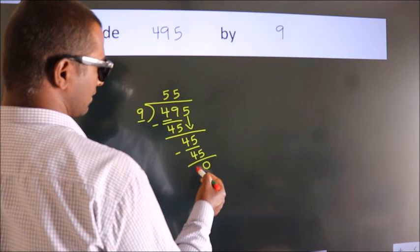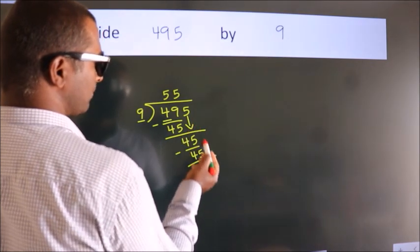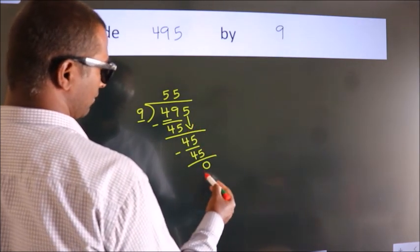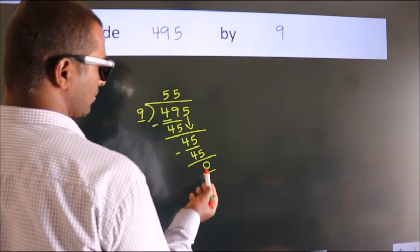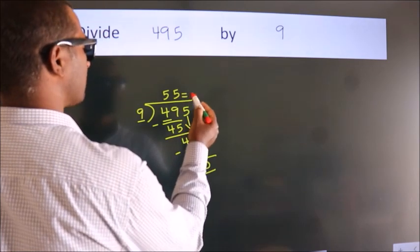After this, no more numbers to bring it down and we got remainder 0. So this is our quotient.